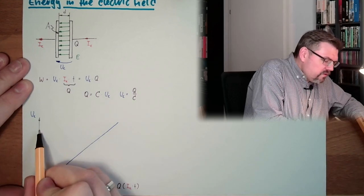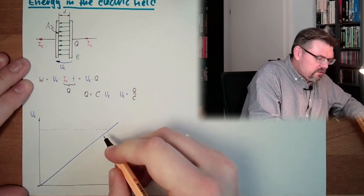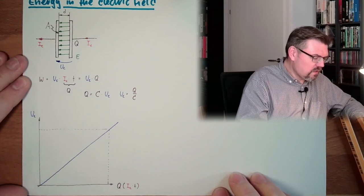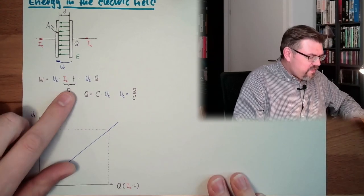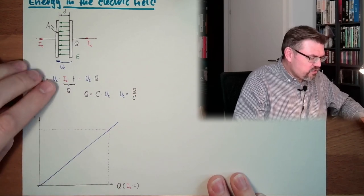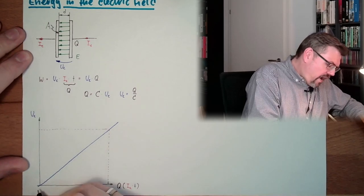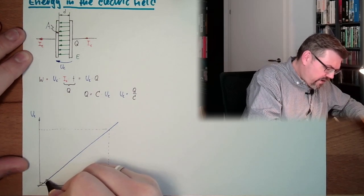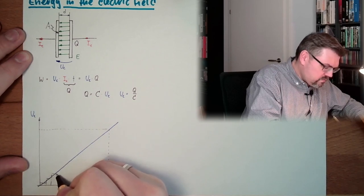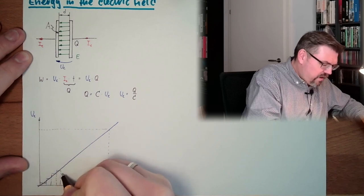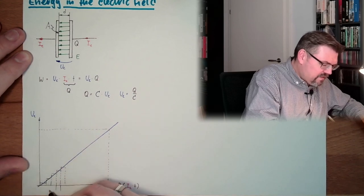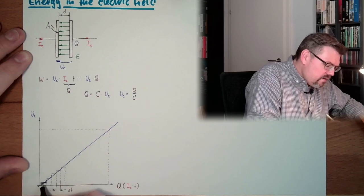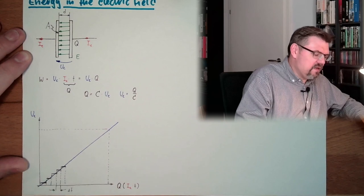And at some point, we have a certain value of UC, and that certain value of UC is corresponding with the charge. And now we say this is actually it. So I am now dividing this into smaller parts, into such small parts. So I'm not saying I have a total time, but I have here a delta T. And I'm replacing this line with average values for this delta T.